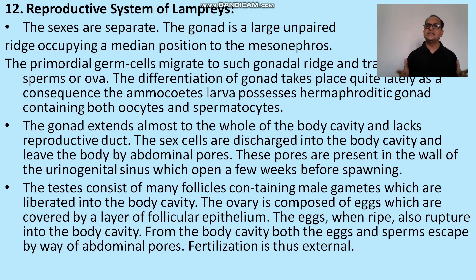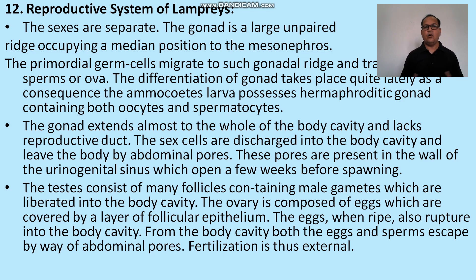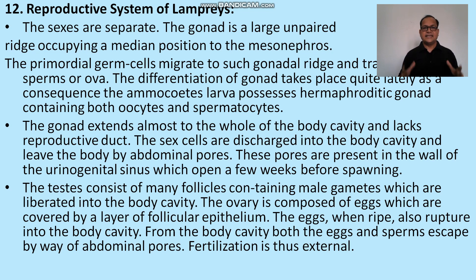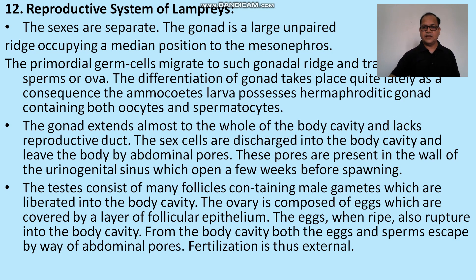Reproductive system: sexes are separate — the lamprey is unisexual, with distinct males and females. The gonad is large and unpaired, occupying a median position alongside the mesonephric kidney. Primordial germ cells migrate to gonadal ridges, and differentiation of the gonad takes place. Interestingly, ammocoete larvae possess a hermaphroditic gonad containing both oocytes and spermatocytes. The gonad extends almost the whole length of the body cavity. Sperms or ova are discharged into the body cavity and leave the body from the abdominal pore, present in the wall of the urogenital sinus, for spawning.